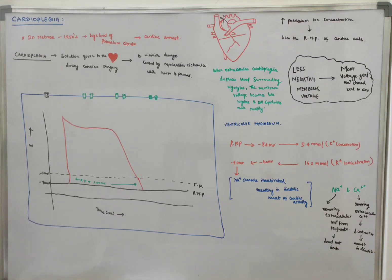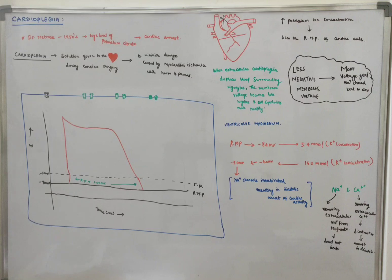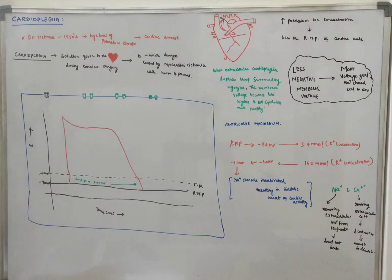Why do we have to arrest the heart? We are administering Cardioplegia to arrest the heart and to take out the function of the heart through our heart-lung machine and our extracorporeal machine.